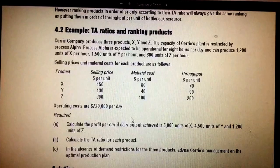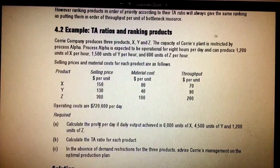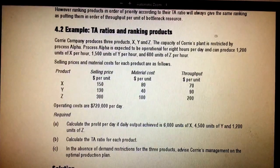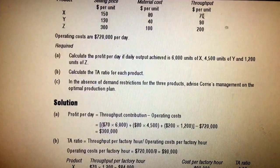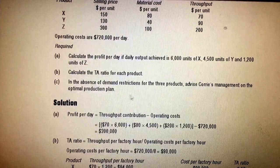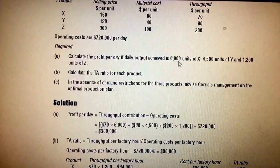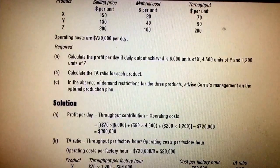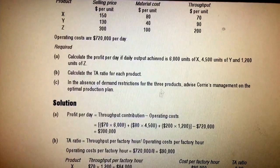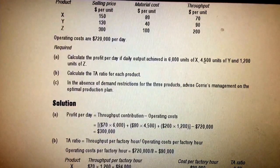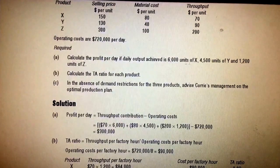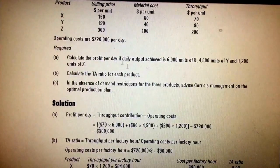The question asks you to calculate profit after the daily output is achieved: 6,000 units of X, 4,500 units of Y, and 1,200 units of Z. To calculate throughput: 6,000 units times 70, plus 4,500 units times 90 for Y, plus 1,200 units of Z times 200.